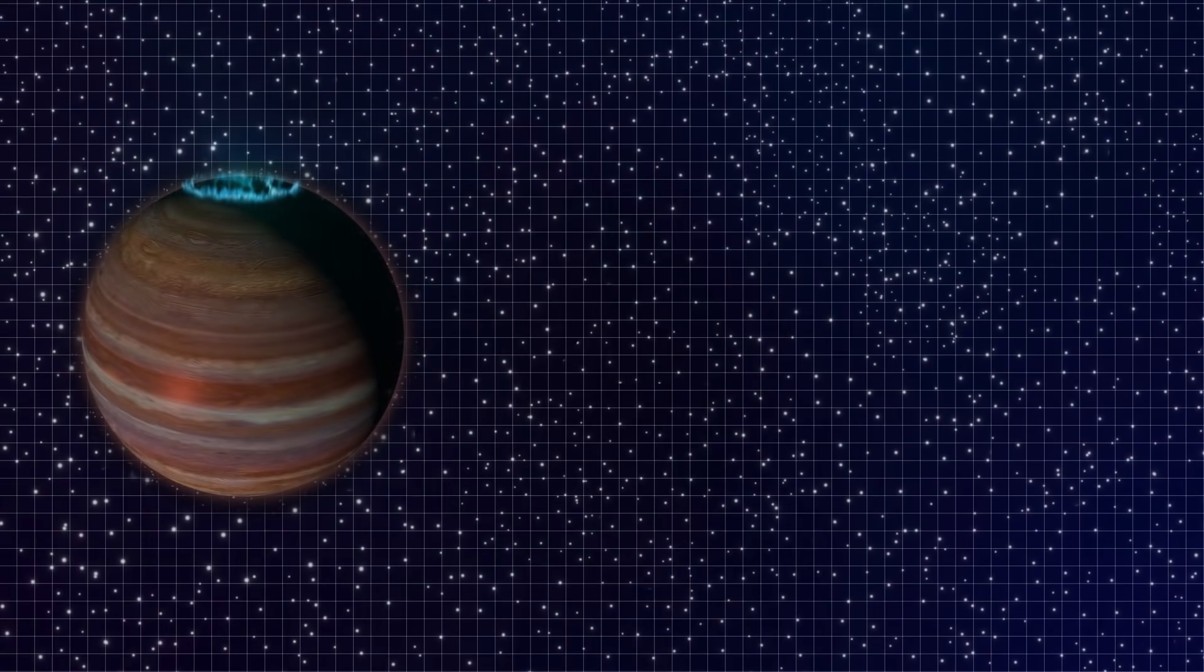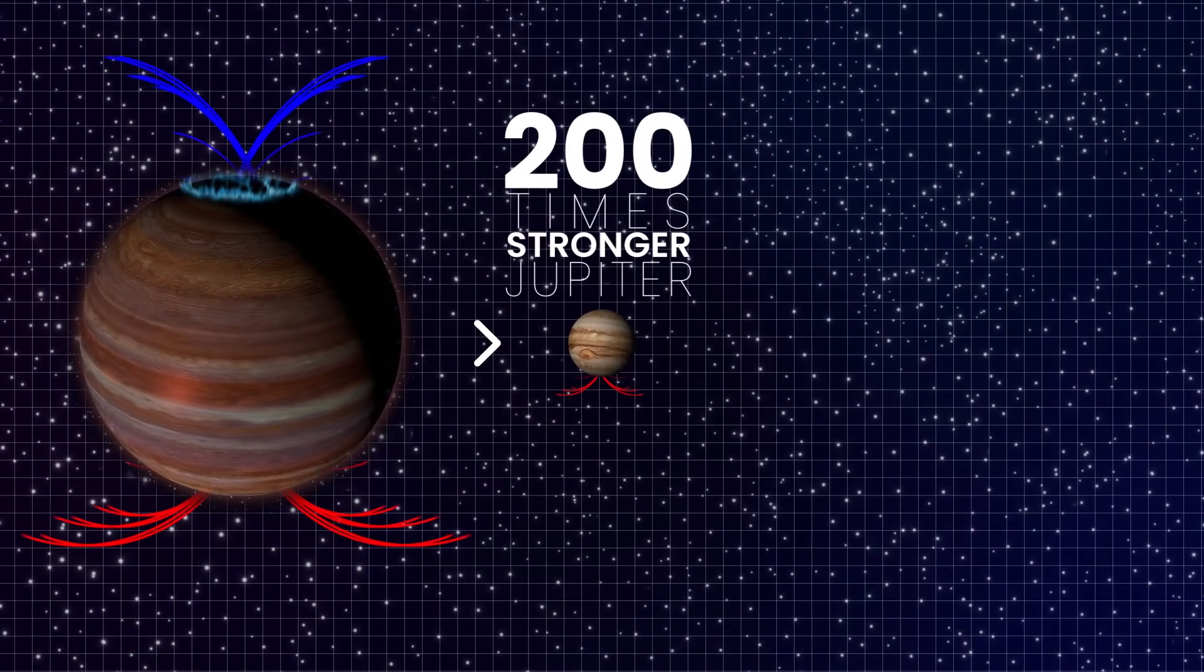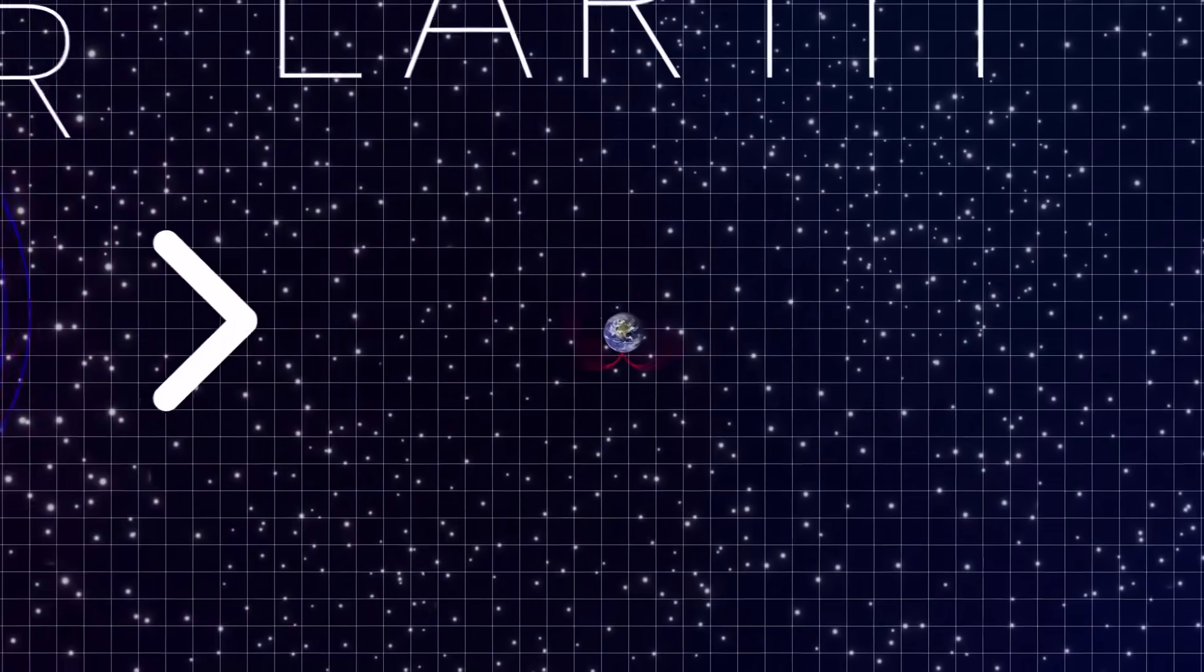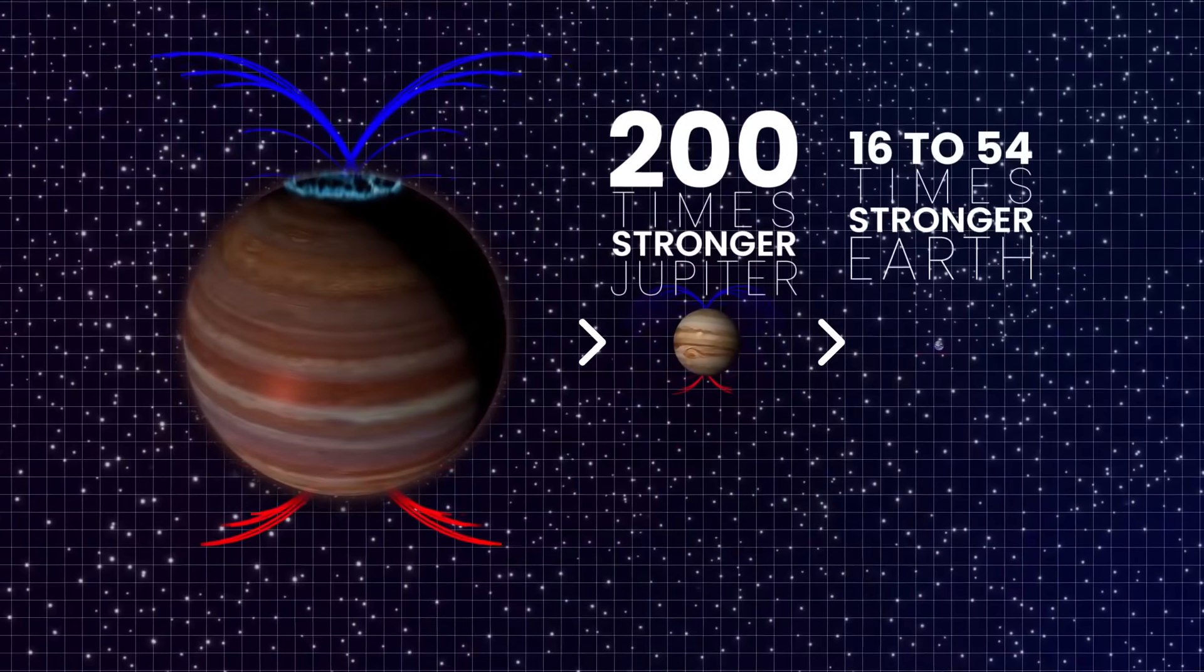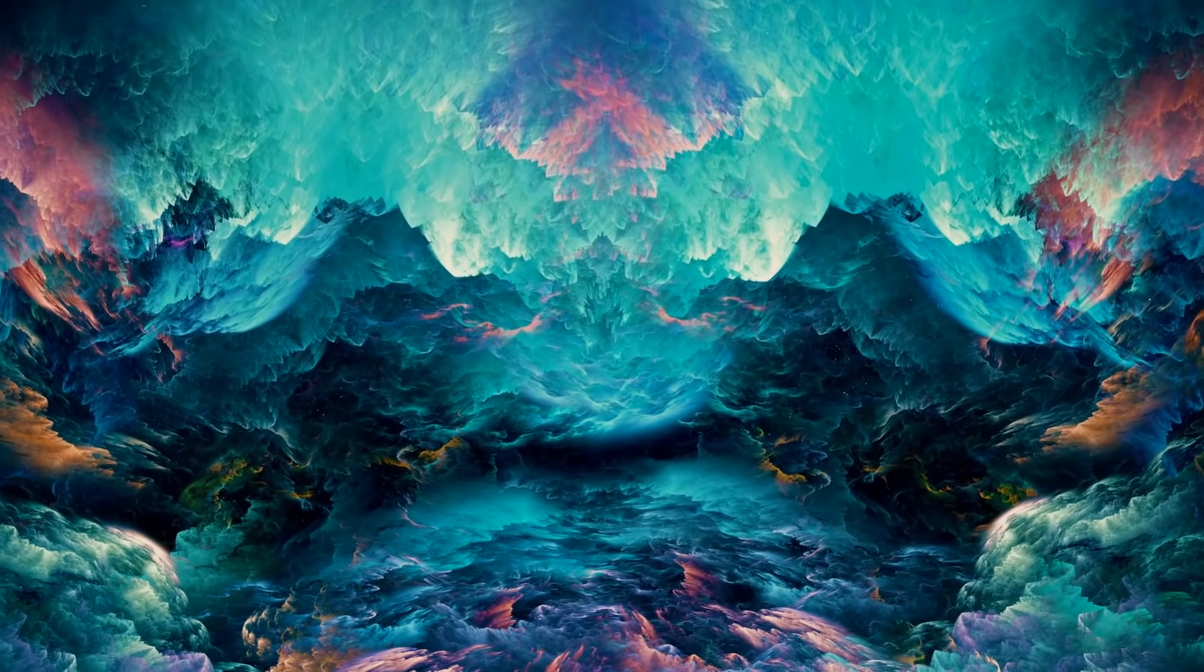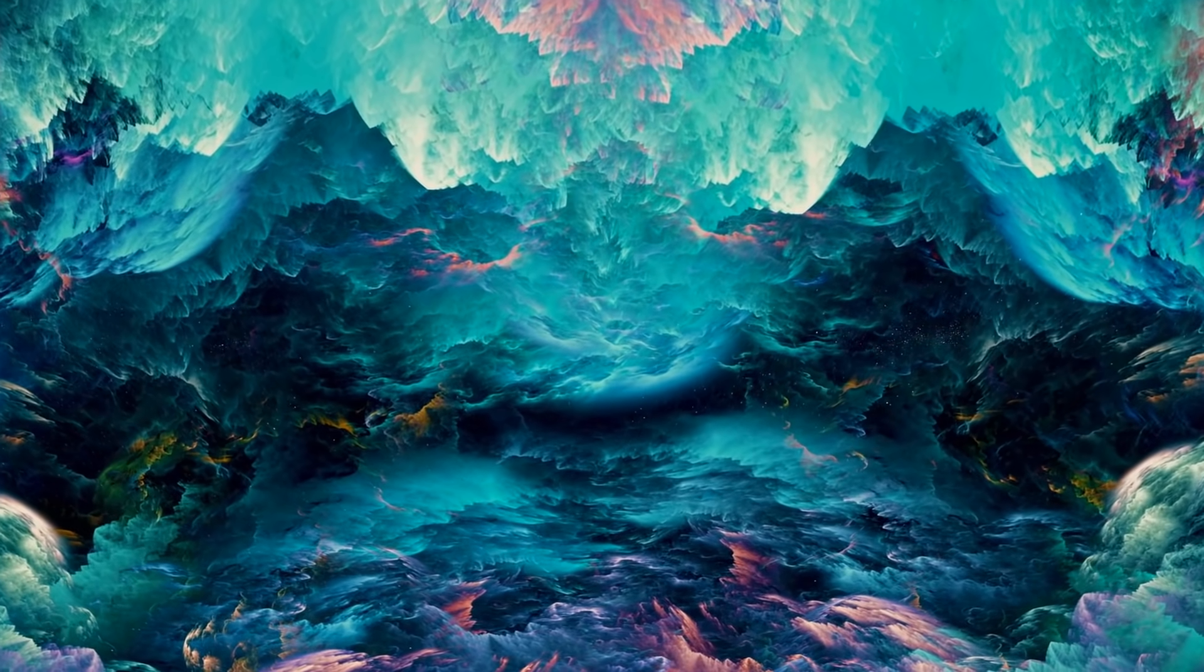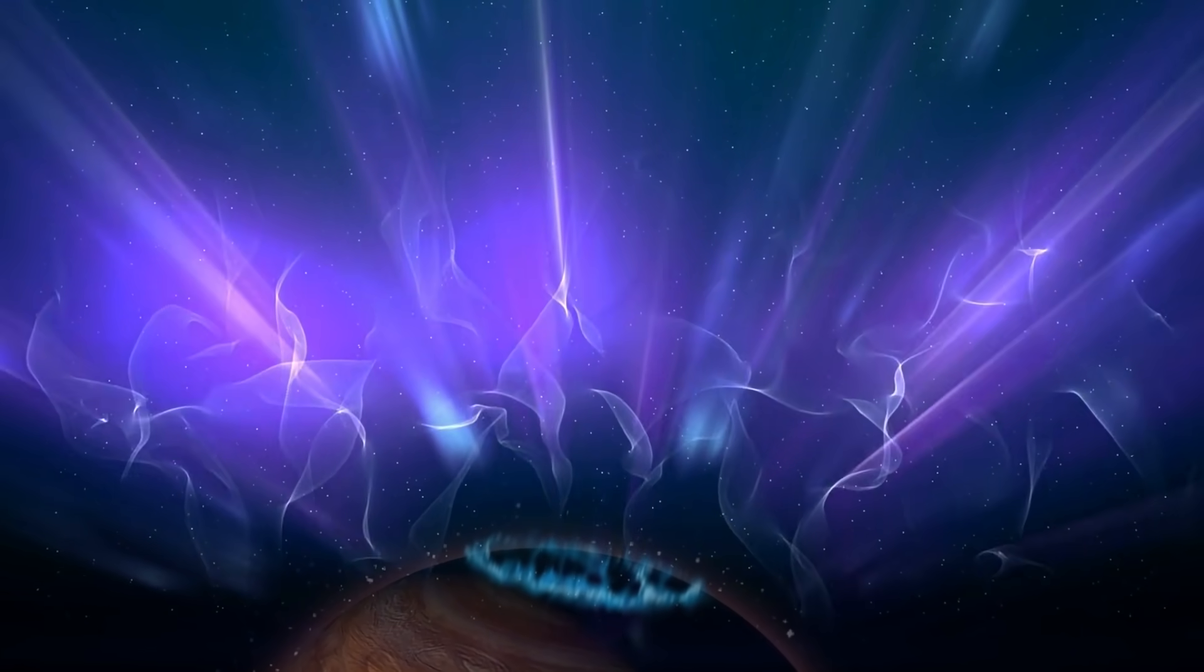You see, it has a magnetic field more than 200 times stronger than Jupiter's, which, as a reference point, has 16 to 54 times stronger magnetic field than the Earth. The planet forms the most spectacular auras, and astronomers don't really know the reason behind this, but hopefully we'll know in the near future.